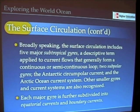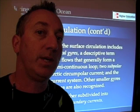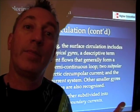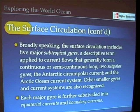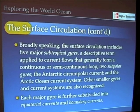We can break the surface circulation down into five major subtropical gyres and two subpolar gyres — subpolar meaning just north or just south of the polar latitudes. We could also talk about the Antarctic circumpolar current as a current system and the Arctic Ocean current system. If we went into finer details, we could recognize smaller gyres and current systems, but for our purposes here, these are what we're mostly concerned with.